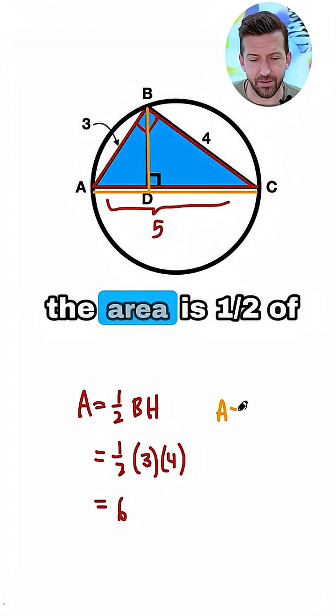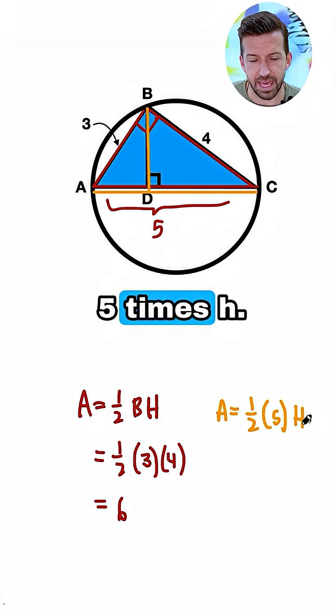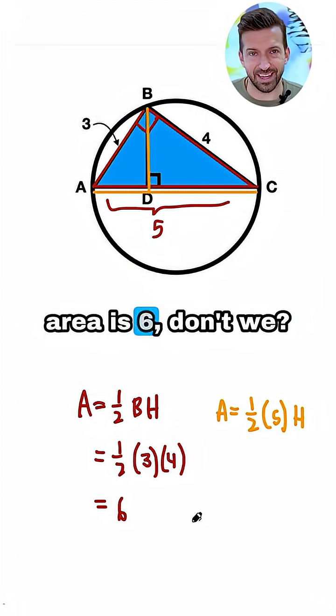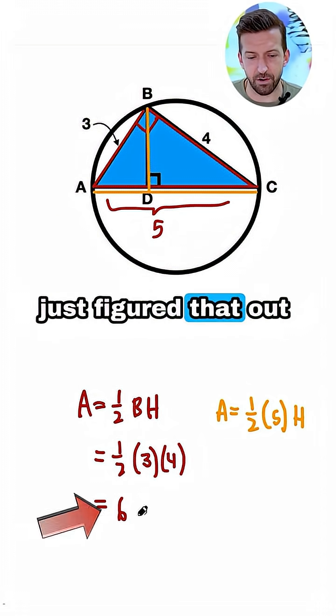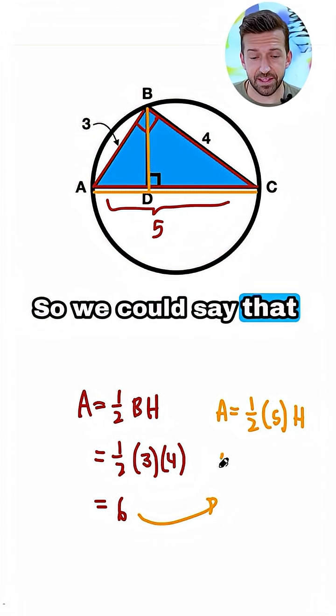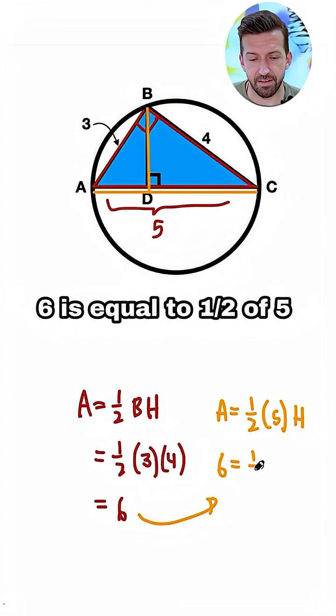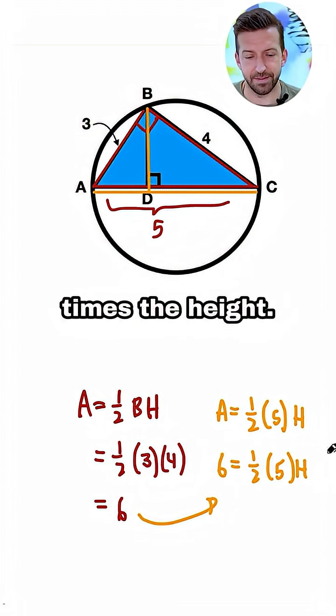We could say that the area is 1 half of 5 times H. But we know the area is 6, don't we? We literally just figured that out over here.